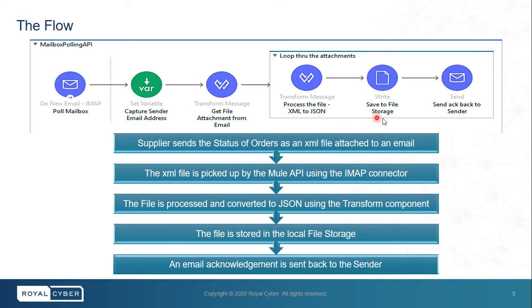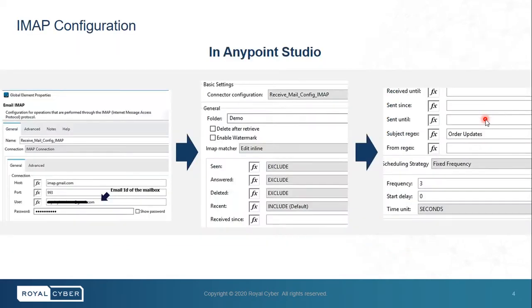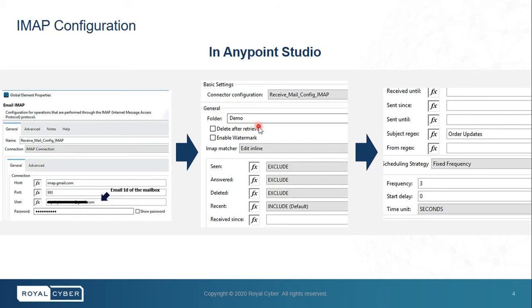It writes the result to a local file storage and finally sends an acknowledgement back to the sender. Here is a quick look at the IMAP configuration in Anypoint Studio. Enter the host name of your mail server in the host name field, and enter the user ID of the mailbox in the user ID field and the password in the password field.